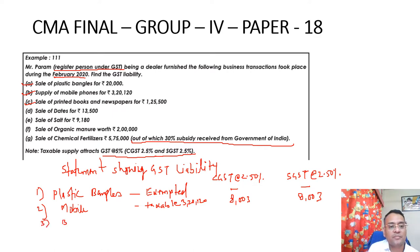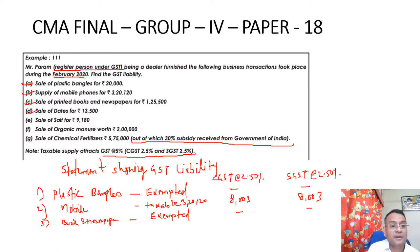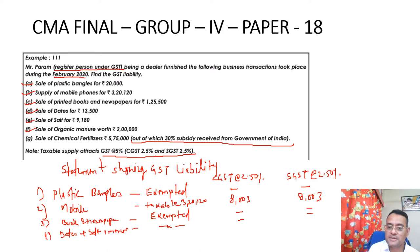Next is sale of printed books and newspaper - that is again exempted. Sale of dates, salt, and organic manure - these are all exempted supplies. So no GST on these items.